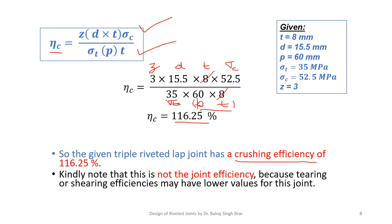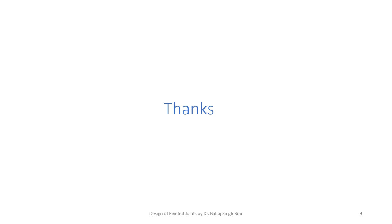The given triple riveted lap joint has a crushing efficiency of 116.25%. Kindly note that this is not the joint efficiency, because tearing or shearing efficiencies may have lower values for this joint. With this, the lecture explaining the concept of crushing of rivets or plates and the calculation of crushing efficiency is complete. Thanks for the patient hearing.